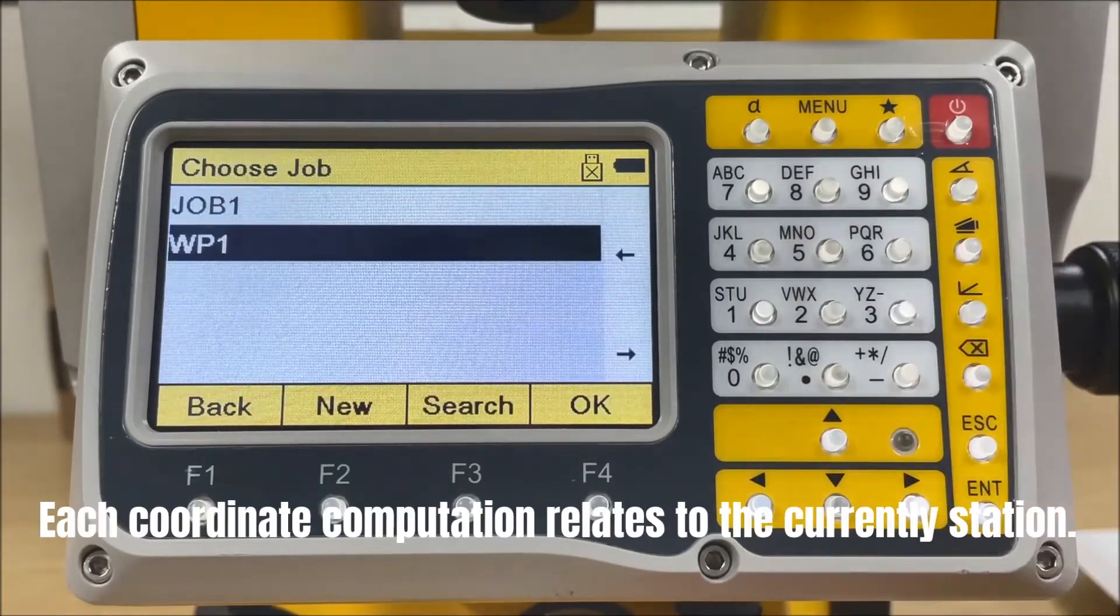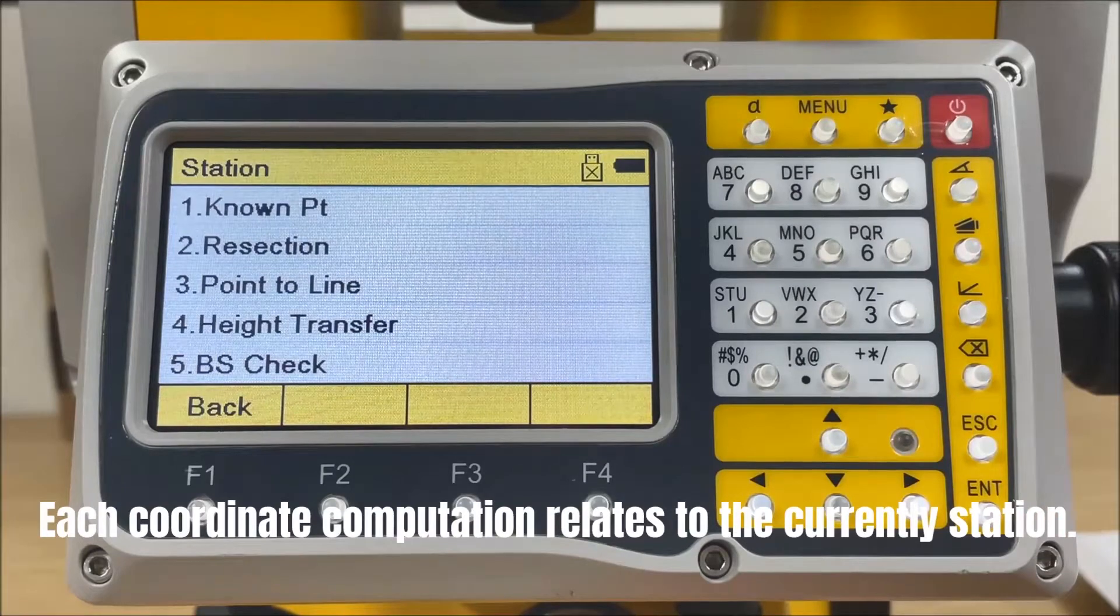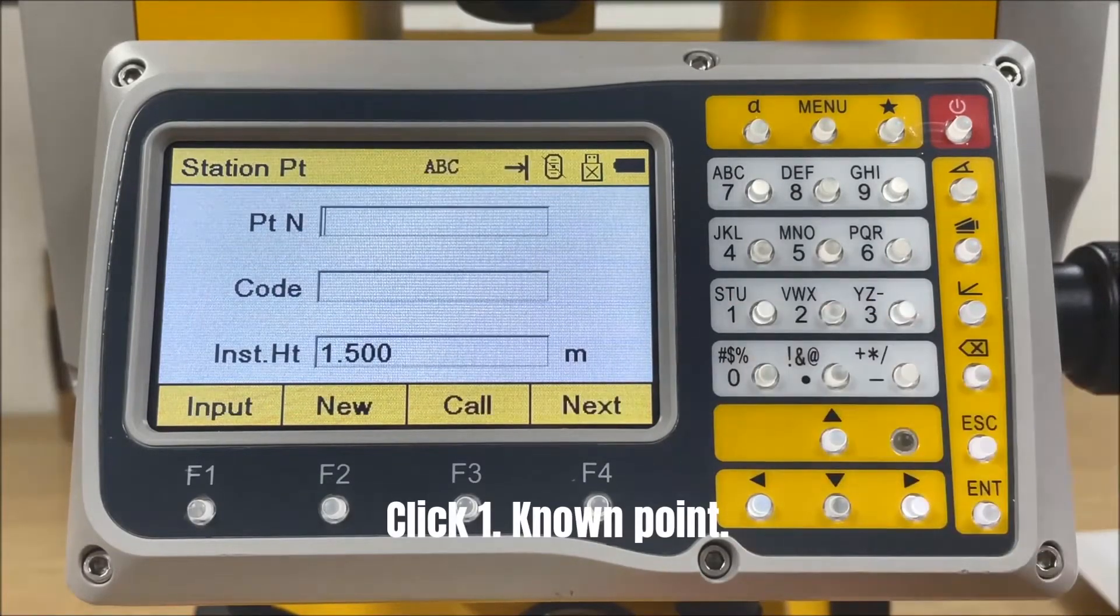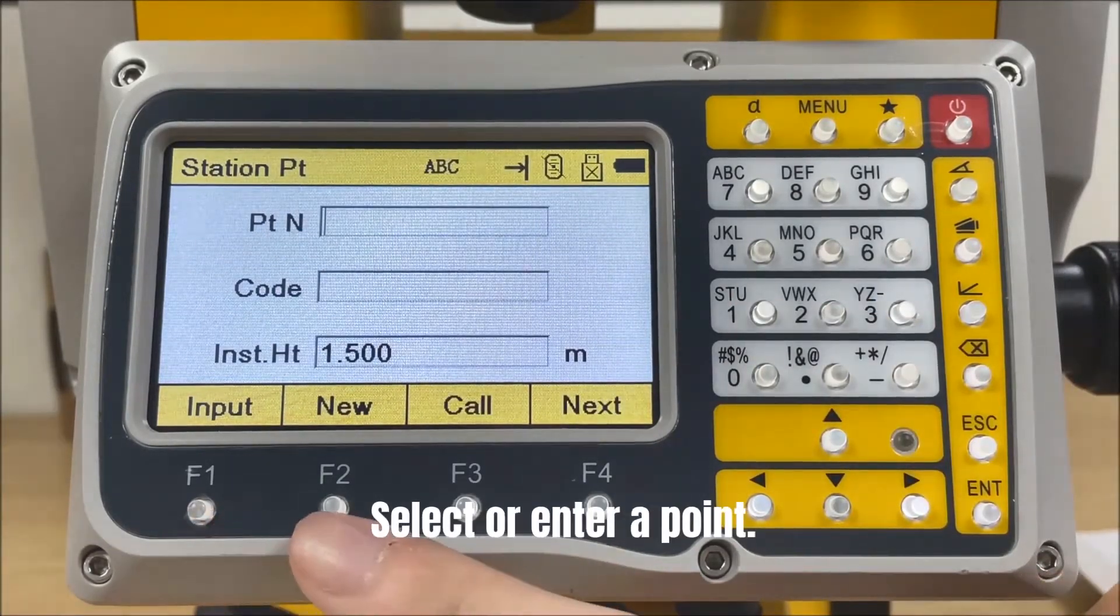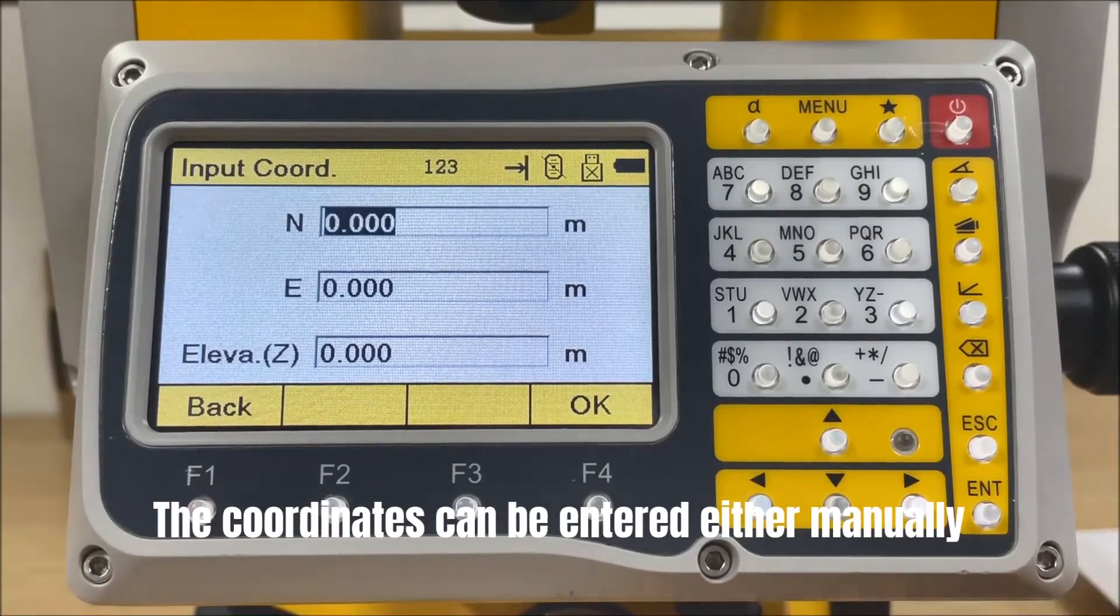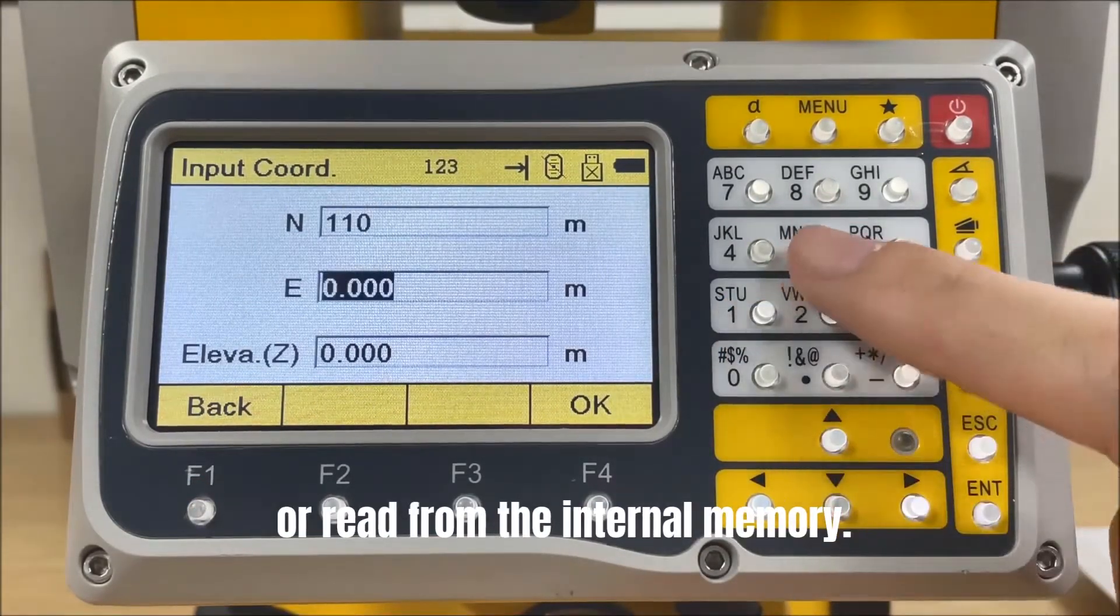Press Station. Each coordinate computation relates to the currently station. Click the first one, known point. Select or enter a point. The coordinates can be entered either manually or read from the internal memory.